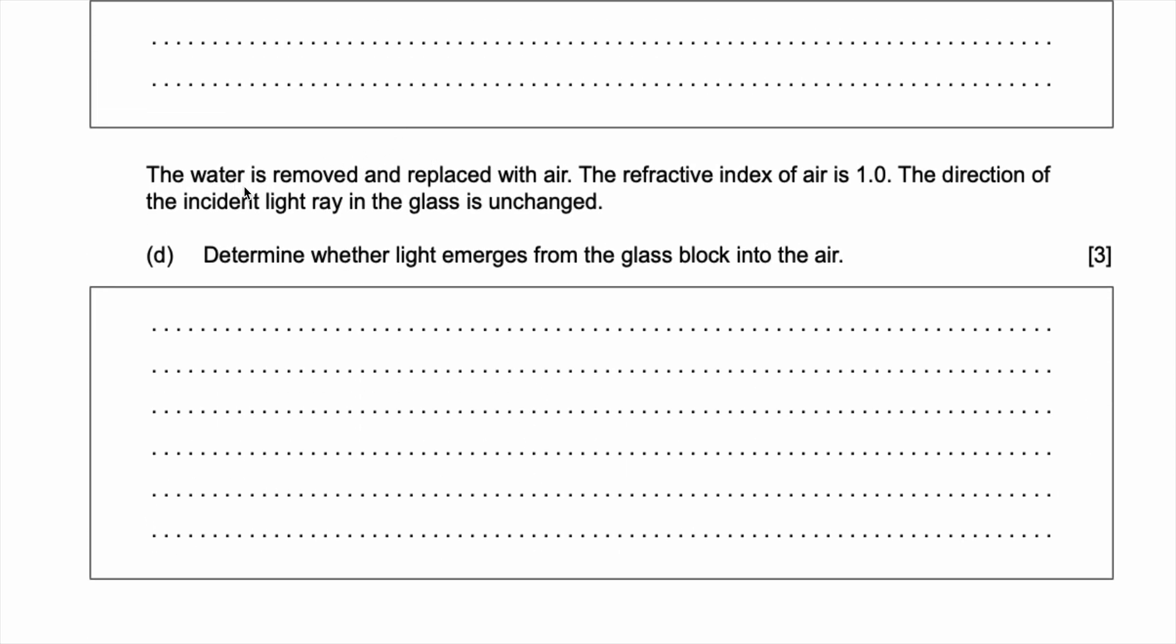Okay. Now, last part. The water is removed and replaced with air. The refractive index of the air is one. The direction of the incident ray in the glass remains unchanged. Determine whether a light emerges from the glass block into the air. So to solve this problem, we're going to be using the concept of critical angles. Critical angles.